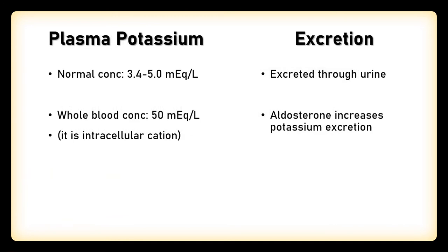Normal plasma concentration of potassium is near about 3.4 to 5 milliequivalents per liter. The whole blood concentration is much higher, near about 50 milliequivalents per liter, because potassium is an intracellular cation. The excretion of potassium is mainly carried out through urine, and the mineralocorticoid hormone aldosterone increases potassium excretion through urine.